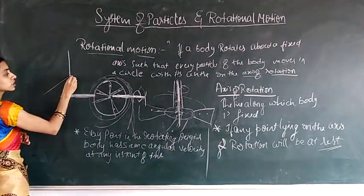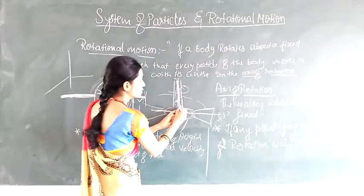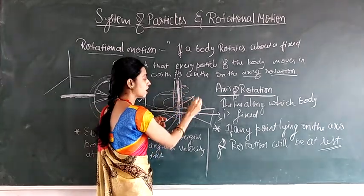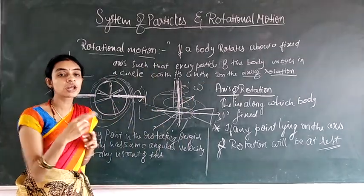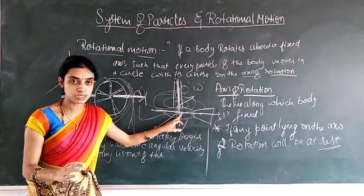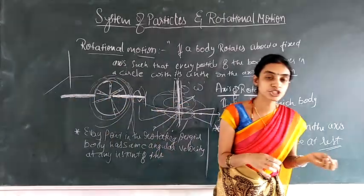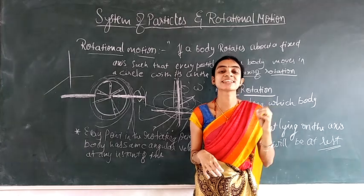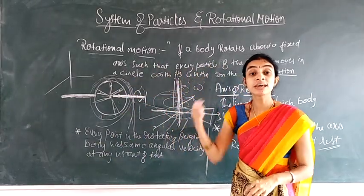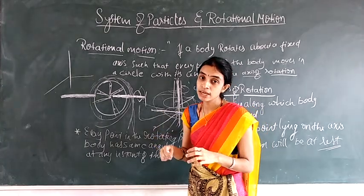Every point on the rotating body has the same angular velocity, which is the angular displacement per unit time interval. In translational motion, the linear velocity of each and every particle is constant. Whereas in rotational motion, the angular velocity of the particle at every point is constant.